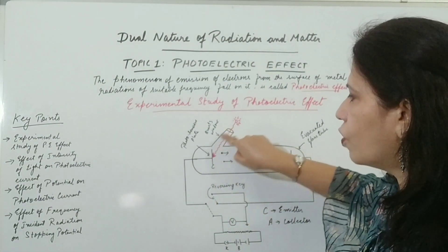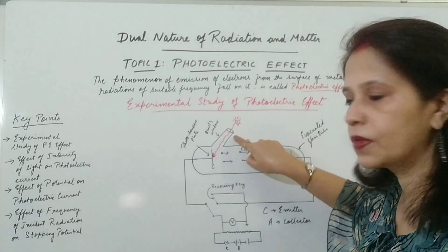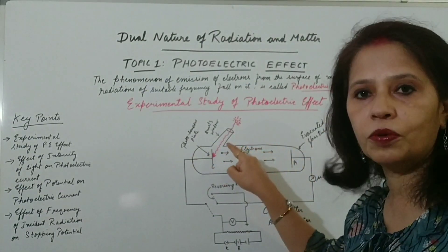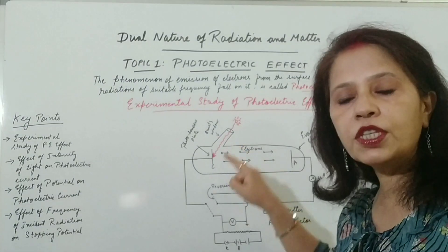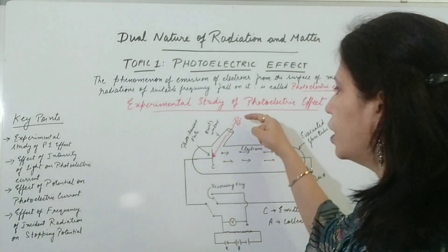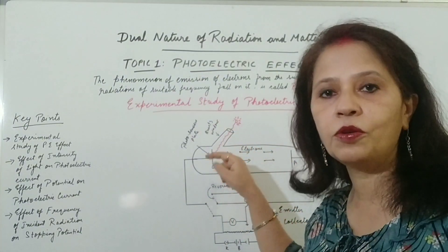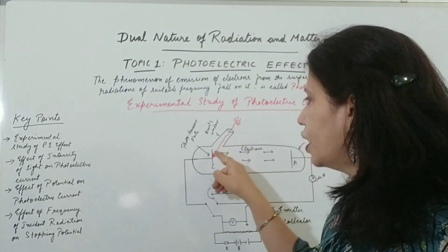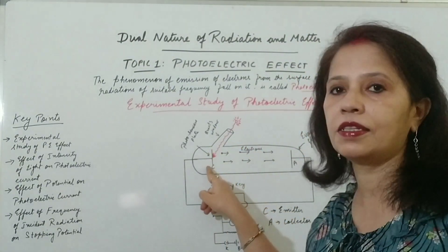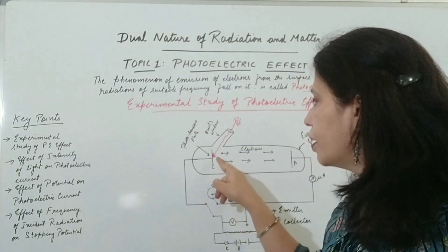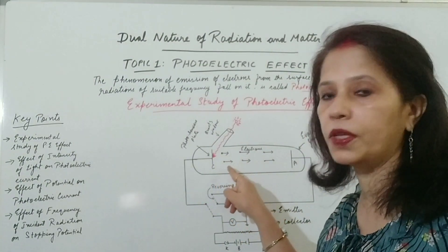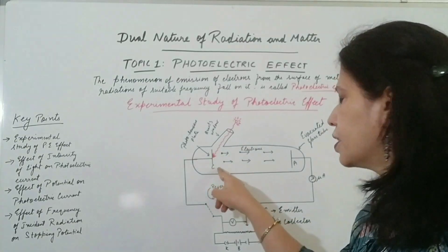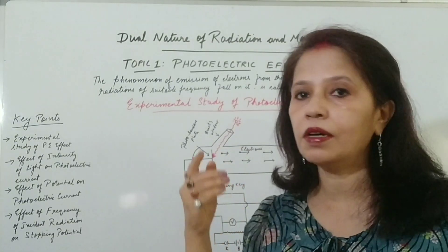A transparent quartz window is sealed onto the glass tube, which permits the ultraviolet radiation to pass through it. It irradiates this photosensitive plate so that the electrons are emitted from the photosensitive plate, that is the emitter plate.